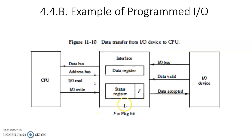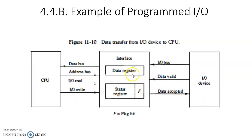Let us look at an example of programmed IO data transfer. This is the setup required — here is the CPU and this is the IO device. In between the CPU and IO device, we need an interface to communicate. There are many differences between CPU and IO device, so an interface is necessary. This interface has a data register to hold the data sent by either CPU or IO device, and a status register to show the status. The status register has a flag that could be either 0 or 1, and based on that, some kind of decision will be taken.